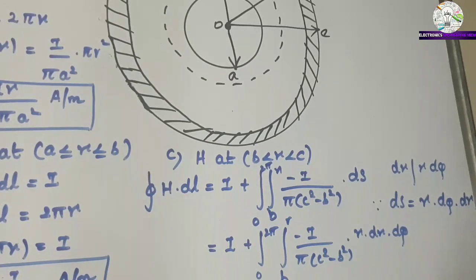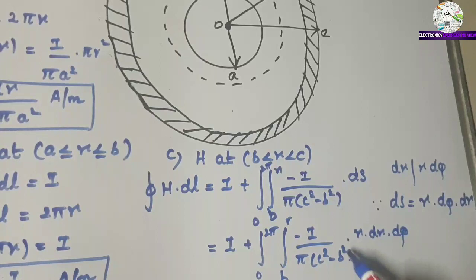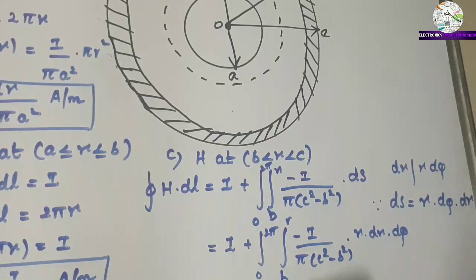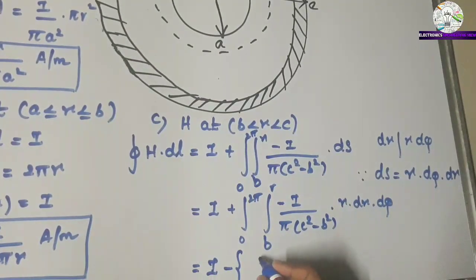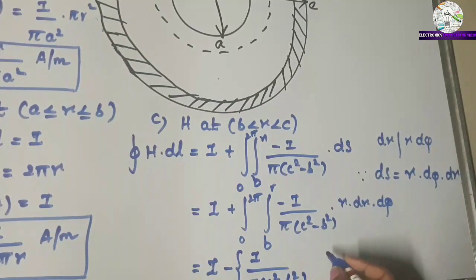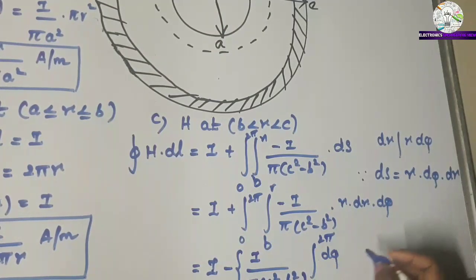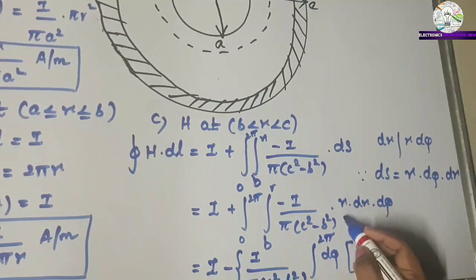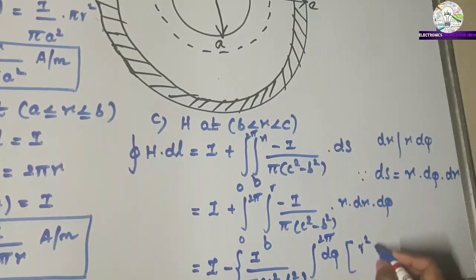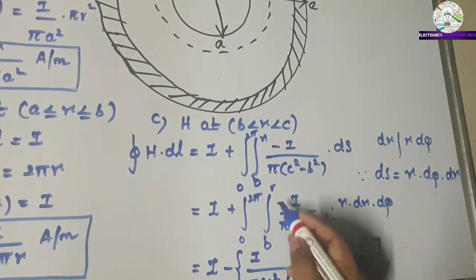Integrating with respect to R: the term r dφ is treated as a constant. The negative sign and the factor minus I divided by pi times (C squared minus B squared) are taken outside the integral, giving an integral from 0 to 2π of dφ, and an integral of R dR whose result is R squared divided by 2, evaluated from B to R.